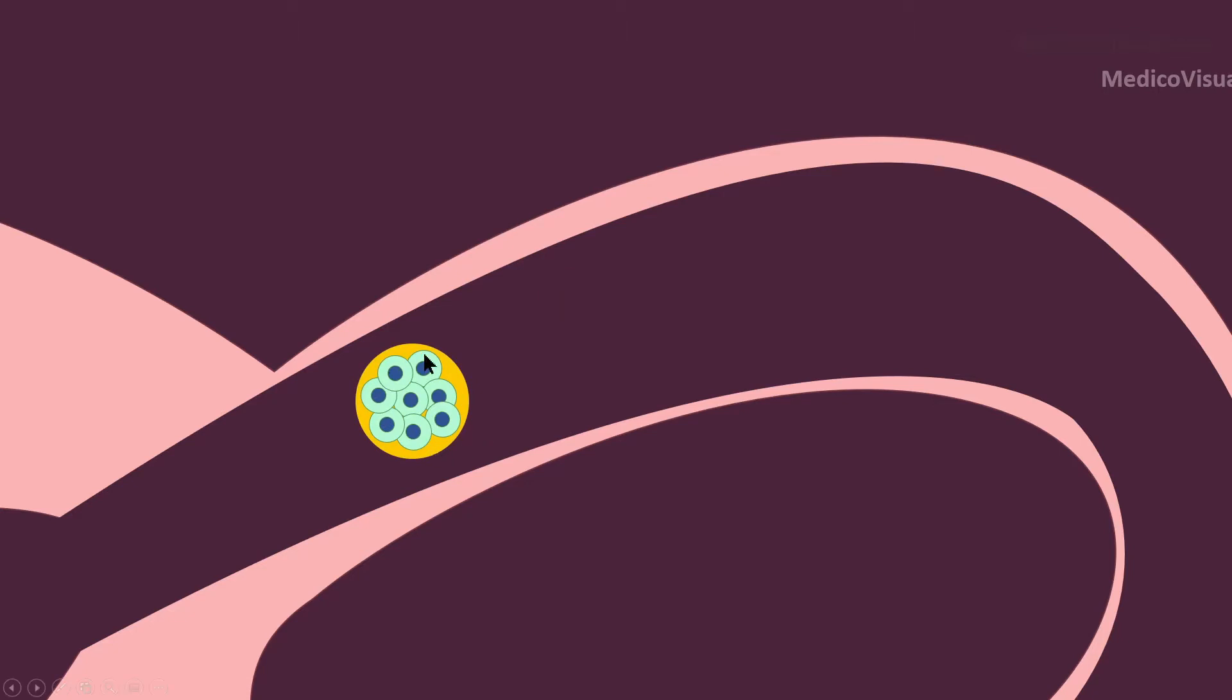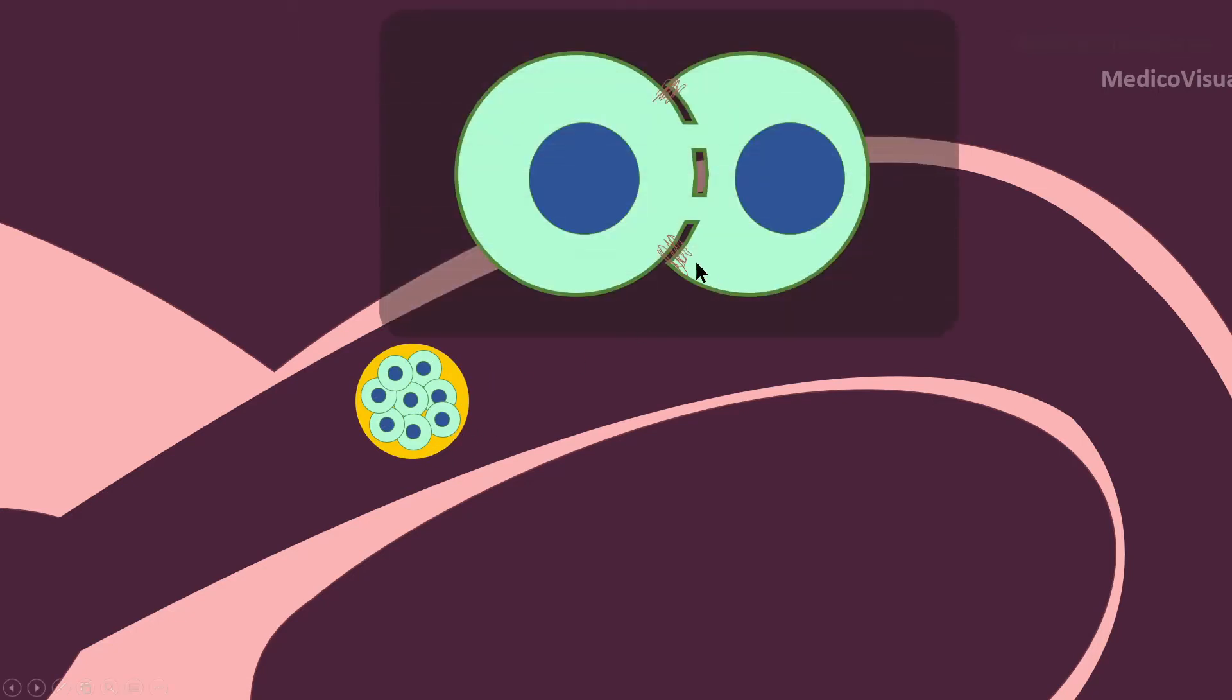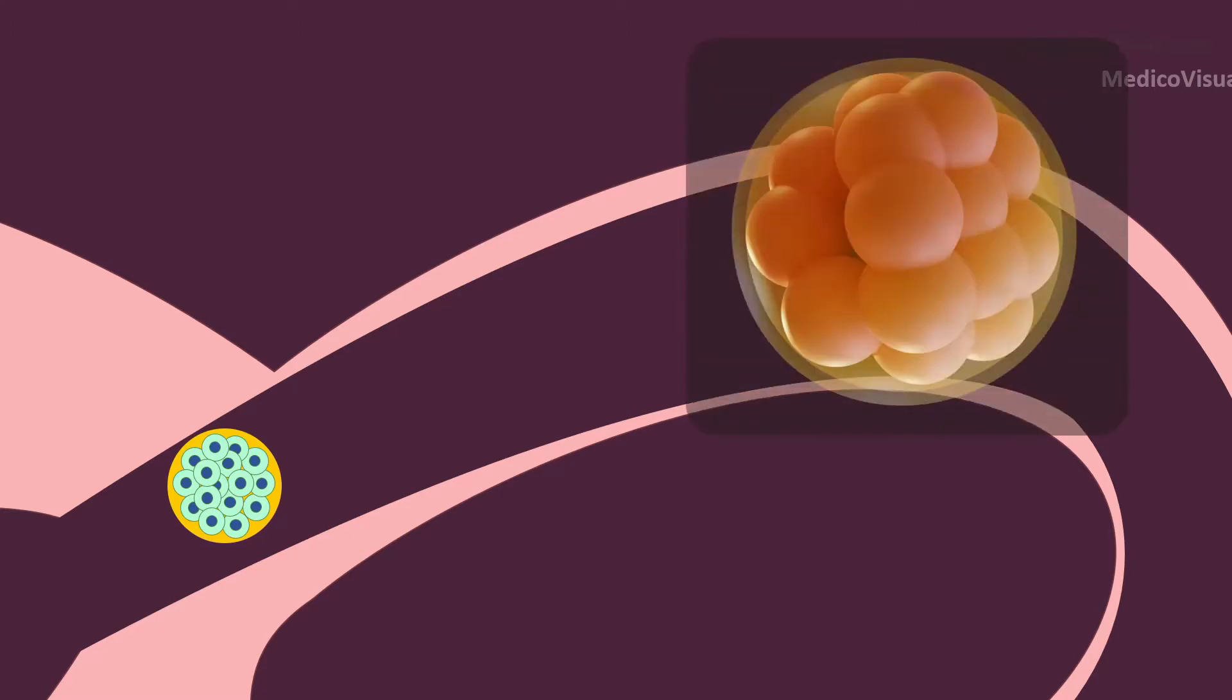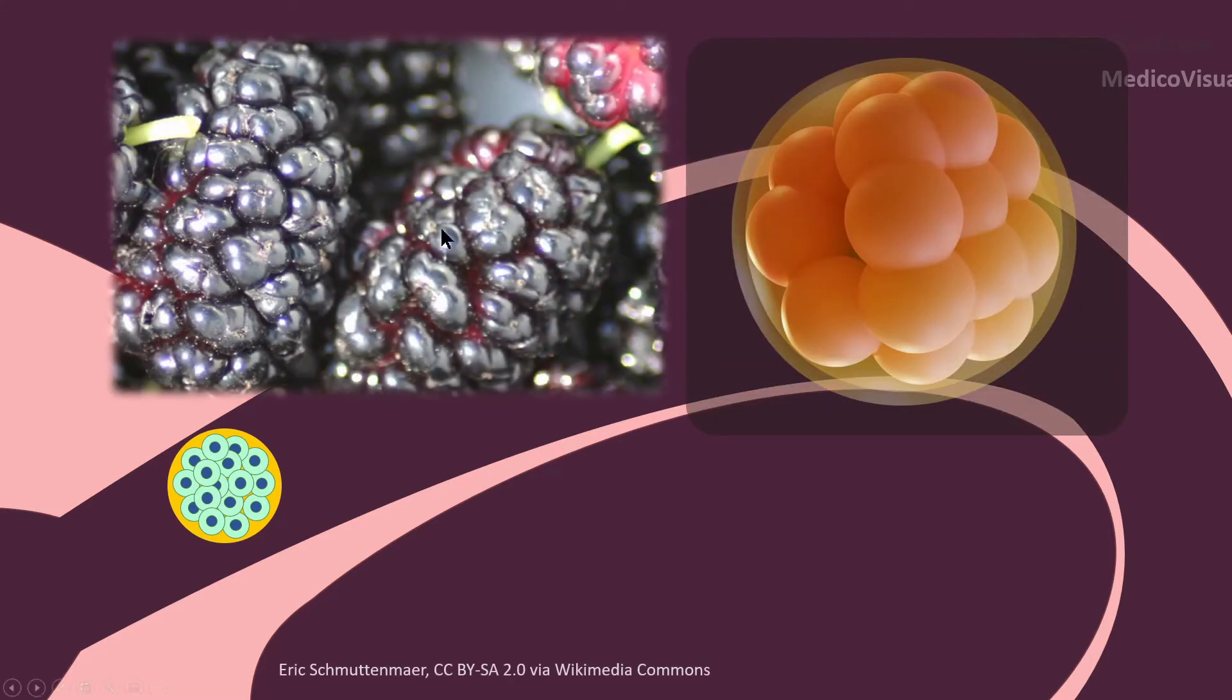And the cells that are tightly packed develop intercellular connections. This process is called compaction. At about 16 cell stage, this beautiful early embryo resembles a mulberry fruit. That's why it is also called morula.